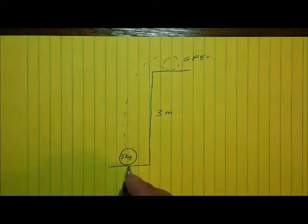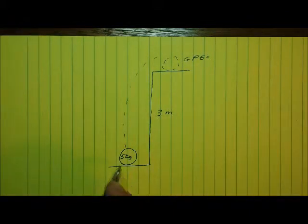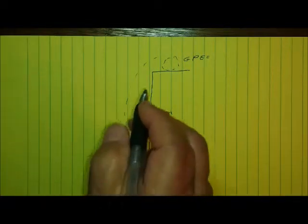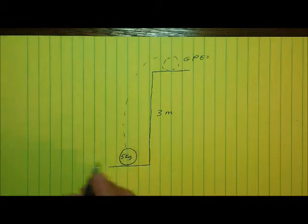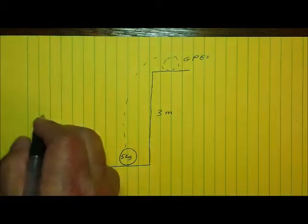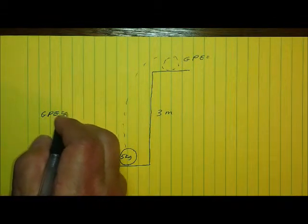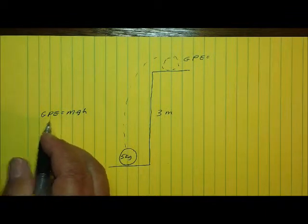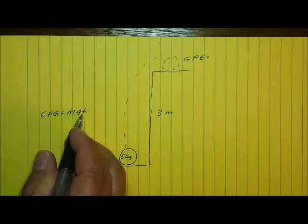So, let's go ahead and calculate using the gravitational potential energy equation. Let's calculate the gravitational potential energy that this object will have when I place it on that shelf. It works like this.